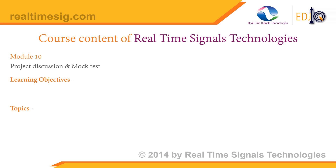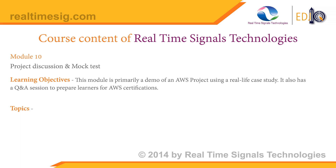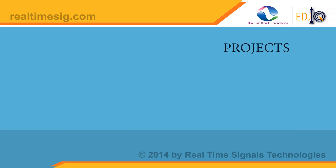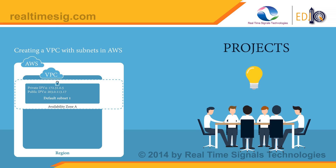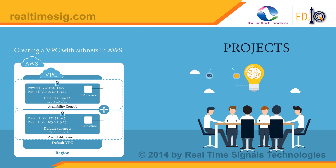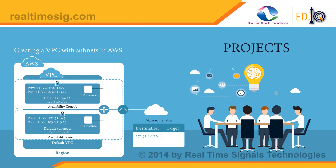Module 10 is Project Discussion and Mock Test — primarily a demo of an AWS project using a real-life case study, with a question and answer session to prepare learners for AWS certification. Topics covered include a hands-on workshop, Q&A, and overview of AWS certification. We provide multiple real-time projects in each course — VPC is one example of a real-time project in the AWS curriculum. Thank you very much.